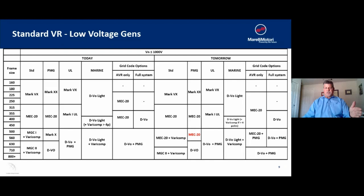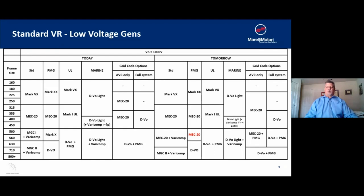The standard offerings: the 160 to 250 frame uses the Mark 5X — that 250 frame is effectively 300 EKW. The next voltage regulator, for the 315 up to the 450 frame, is our Mech 20, which is very popular. We use the MGC1 with a Varicomp option on the 500 and 560 frames, and the MGC2 on the 630 frame and larger units. Depending on options chosen, we have different voltage regulators for PMG, UL, or Marine Society approved applications, and also what we typically recommend when clients are looking at purchasing a voltage regulator only, which would be interchangeable with other generator manufacturers.